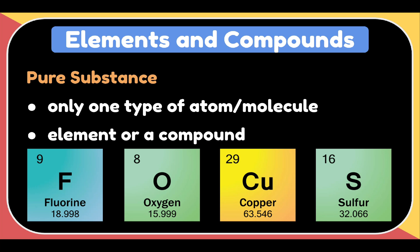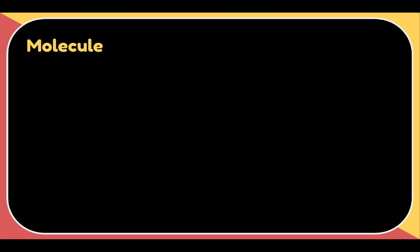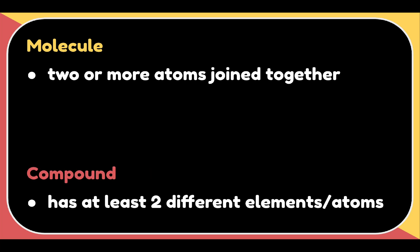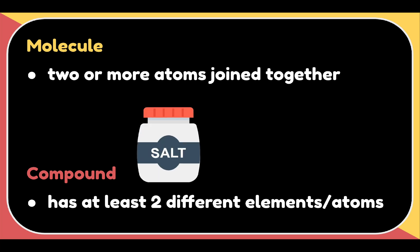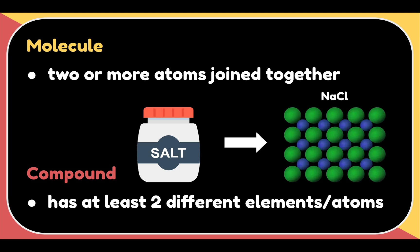What is the difference between a molecule and a compound? A molecule is two or more atoms joined together chemically. A compound, on the other hand, is a molecule that contains at least two different atoms or elements that are chemically combined in a fixed ratio. For example, table salt. Table salt is a compound because it contains sodium and chloride, or NaCl.